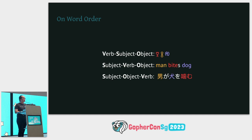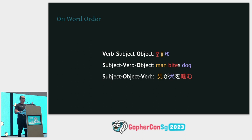Words have meanings, and when you put together words in a sentence, the sentence has meanings too. In the made-up language I created, Lian means person, Kaj means bite, Jing means dog. The two valid sentences mean very, very different things, just like in English. We say that these two sentences have different semantics.